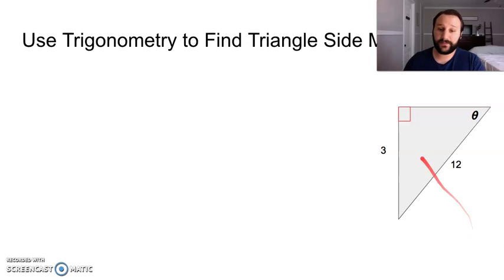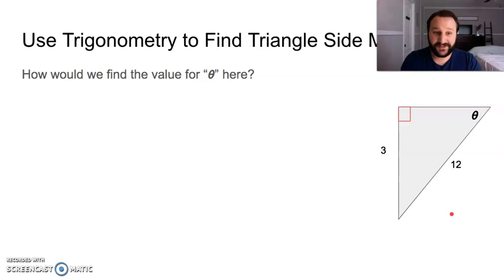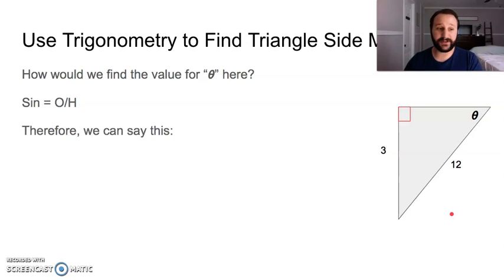I've got theta up here, 3 on this side and 12 as the hypotenuse. See if you can figure this out. We can say sine of theta because we have opposite of theta and the hypotenuse. We do the inverse of sine, 3 over 12, hit the enter button, and we get 14.5 when we round up.